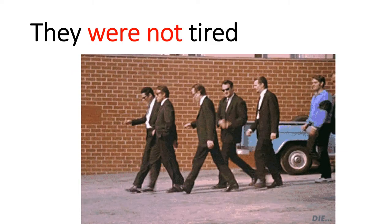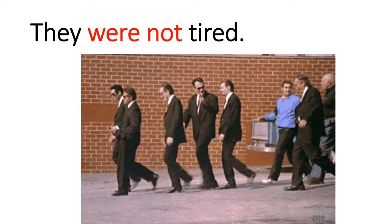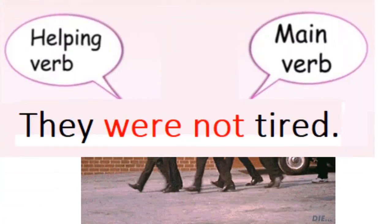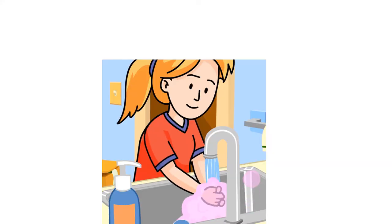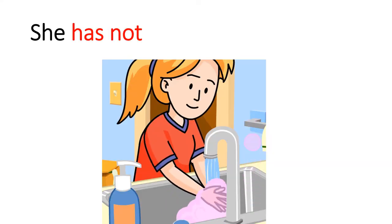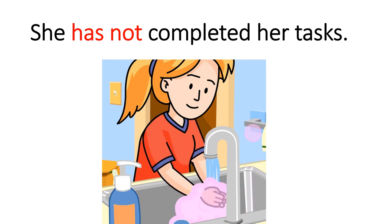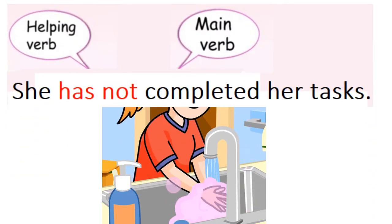They were not tired — वो थके हुए नहीं थे. 'Were' helping verb है और 'tired' main verb है. अगला: She has not completed her tasks — उसने अपना काम पूरा नहीं किया. 'Completed' main verb है, 'has' helping verb है, और 'not' negative form है. Task यानी काम, completed यानी मुकमल करना.